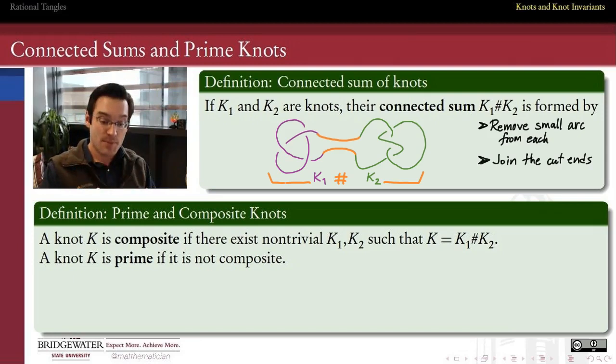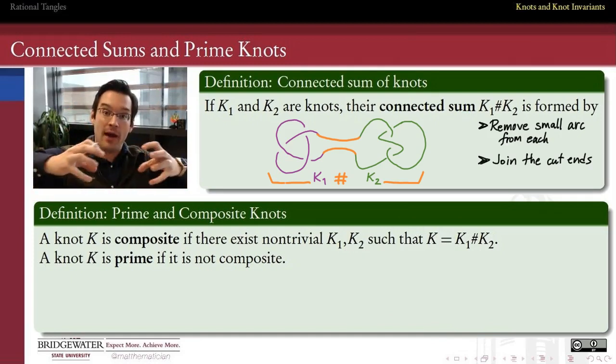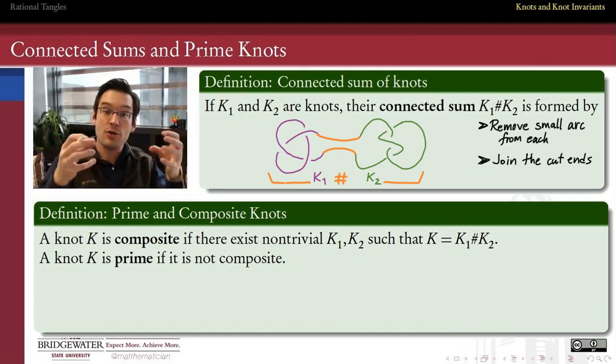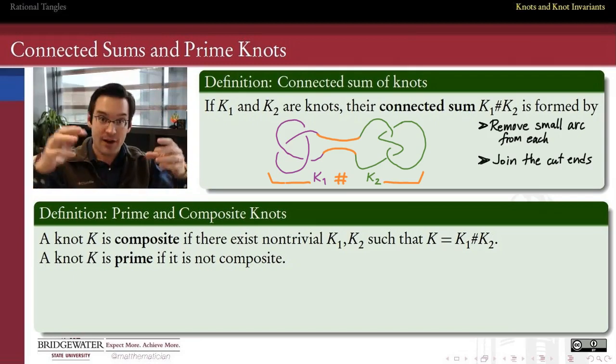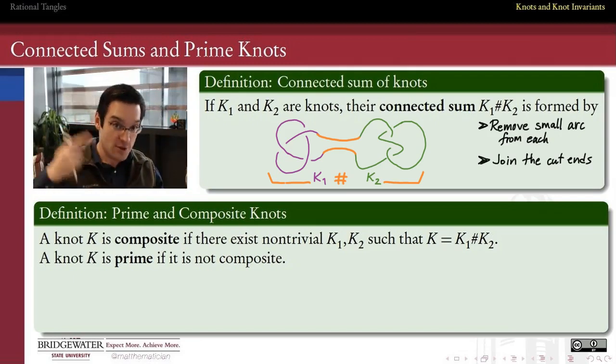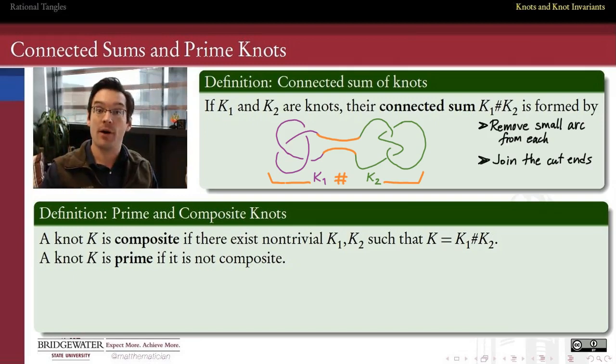So that gives us the connection piece. Now we know how to define what it means for a knot to be composite or a knot to be prime. A knot is composite if there are non-trivial knots, k1 and k2, so not the unknot, such that k is the connected sum of k1 and k2. So composite means that we can pull apart the knot and identify two non-trivial sub-knots, of which that larger knot is the connected sum. A knot that we can't do that to will be called a prime knot. So a knot is prime if it's not composite.